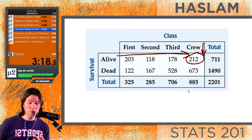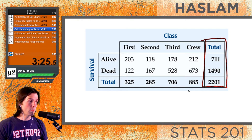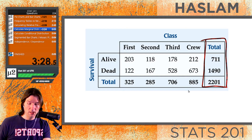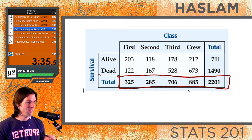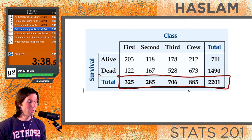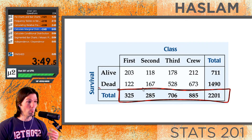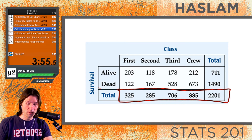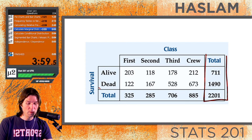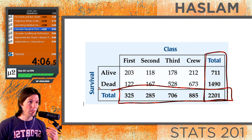Next, we can look at calculating the marginal distribution. The marginal distribution is the distribution in the margin, so there are two of them: one for who survived and one for what class they were in — first, second, third, or crew. Marginal distributions are kind of like your frequency tables, because we're only focusing on one variable. The bivariate table has two marginal distributions, one for each variable.